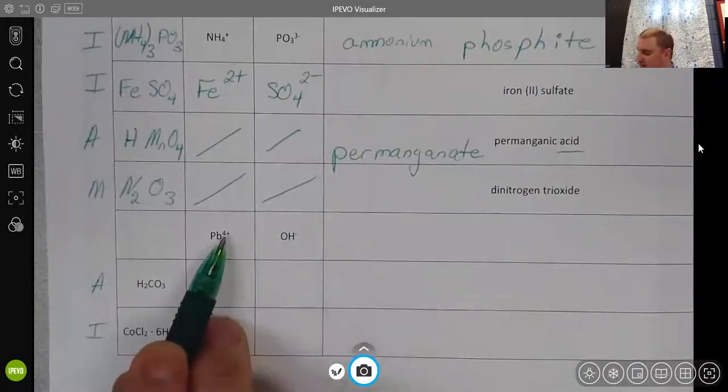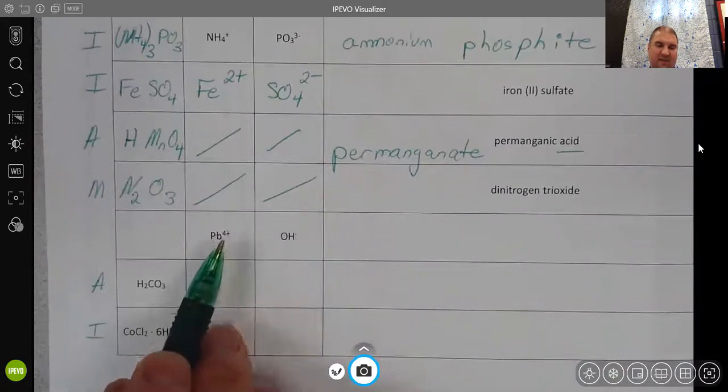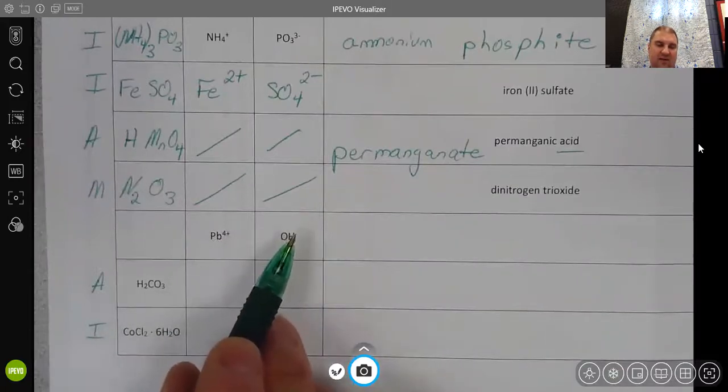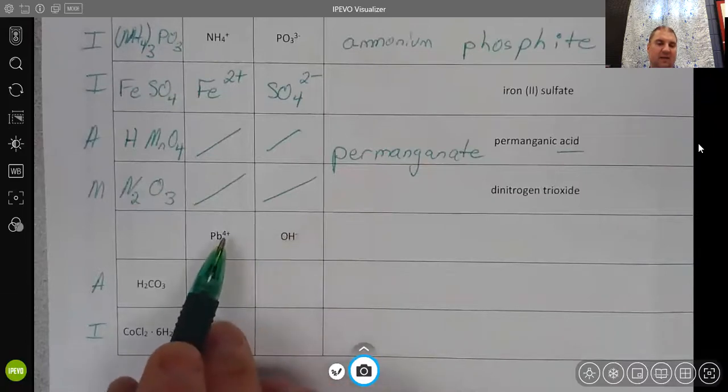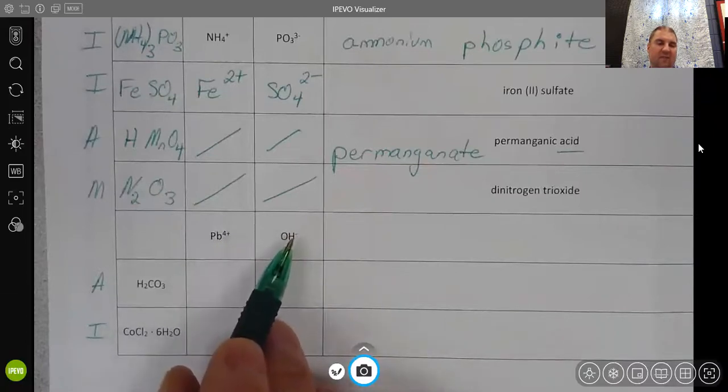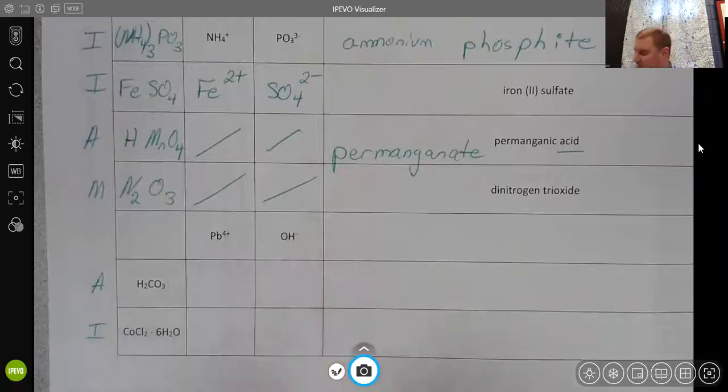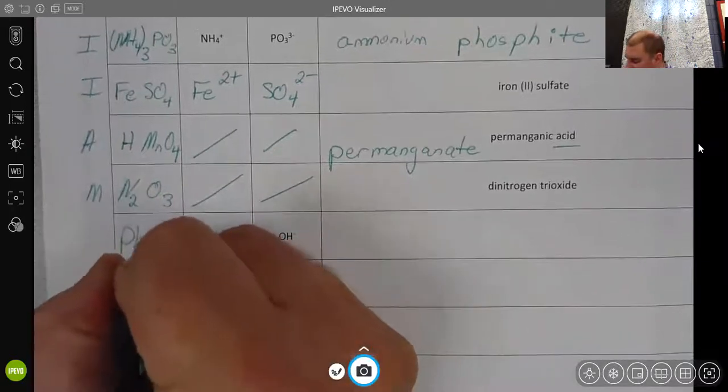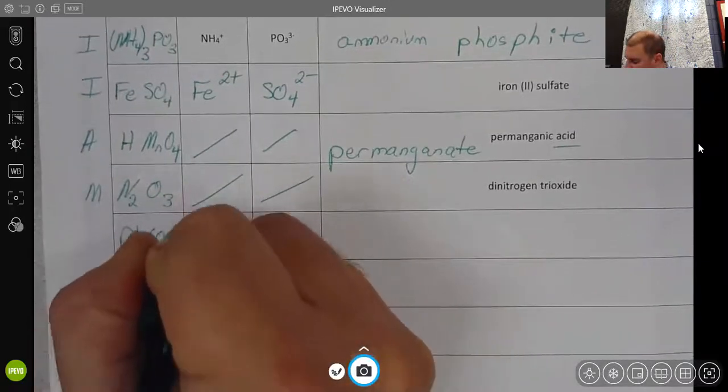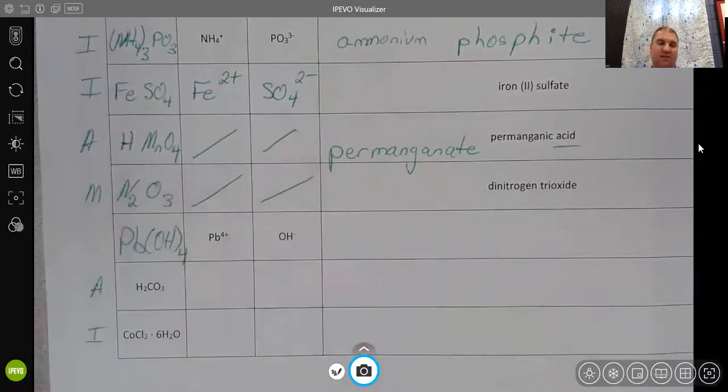This compound here, the lead is 4 plus, the hydroxide is 1 minus. That might be a little tricky to see with this zoom level, but this means 4 and 1. 4 is the least common multiple, and to get a total of 4 plus and 4 minus, we have to have 4 hydroxides. So we're going to say Pb(OH) in parentheses, with a 4 outside of the parentheses.